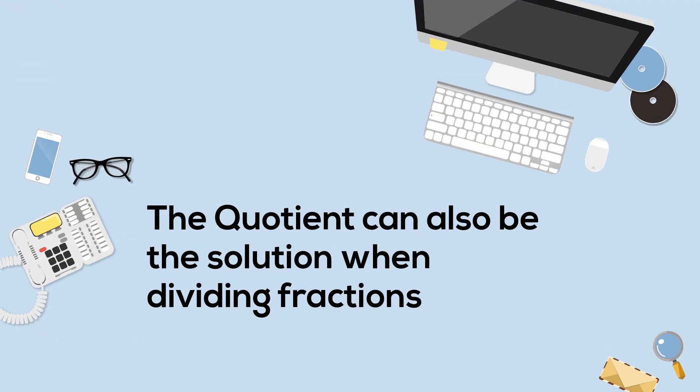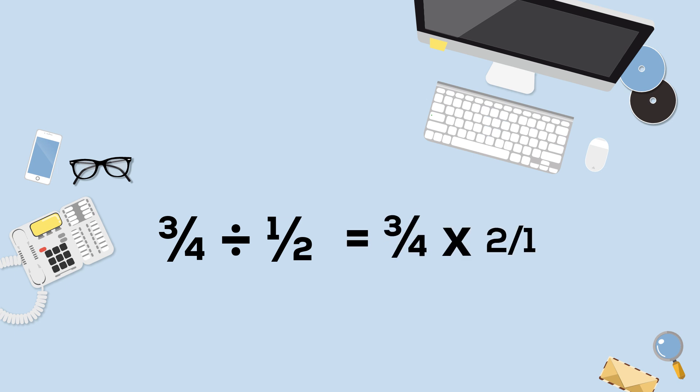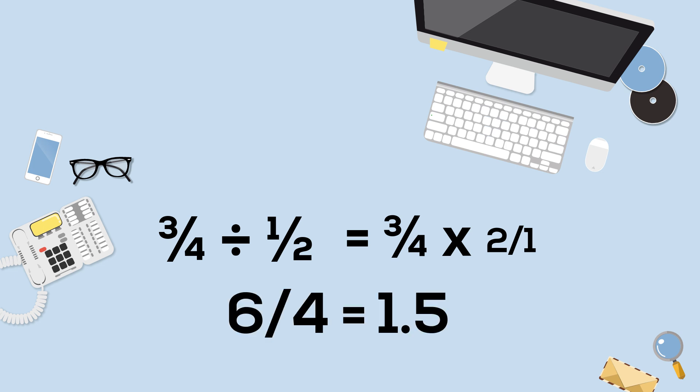The quotient can also be the solution of dividing fractions. For example, let's divide 3 fourths divided by 1 half. If you remember, you use the keep, change, and flip — so I'm going to flip it over and it becomes 6 over 4, so the quotient would be 1.5.